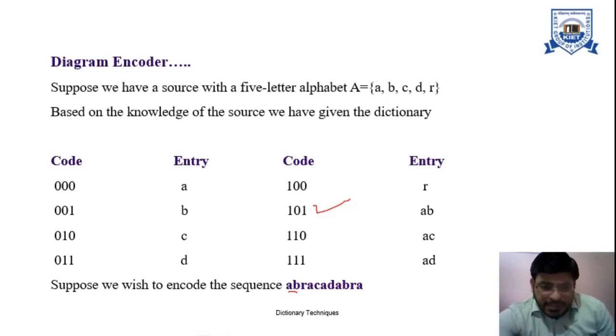Then we select the next two characters, but this entry is not in this particular dictionary. So what we will do? We will try to find the entry for the first character, that is r. For r we have the entry, so we replace r with this particular code.